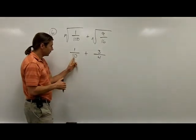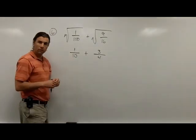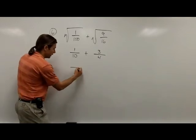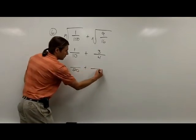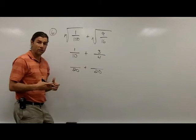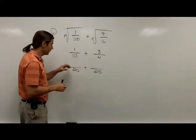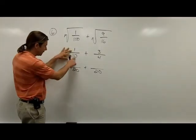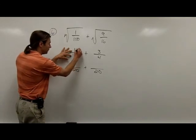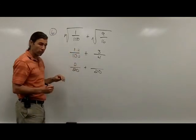In this case, if I'm looking at 10 and 4, my LCD is going to be 20. So I need to build each of these fractions so they have a common denominator of 20. First fraction, I have 10 in the denominator, so I'll have to multiply the top and the bottom by 2, which will give me 2/20.